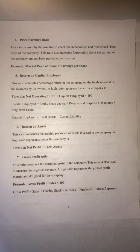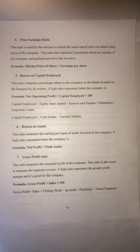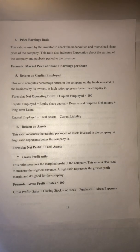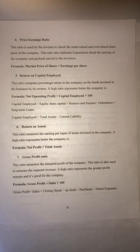Next is Return on Asset. Assets can be used to generate income for the company — for example, land and buildings in a prime location can generate revenue. This ratio shows the relationship between net profit and total assets, measuring how effectively the company's assets are being used to generate revenue.